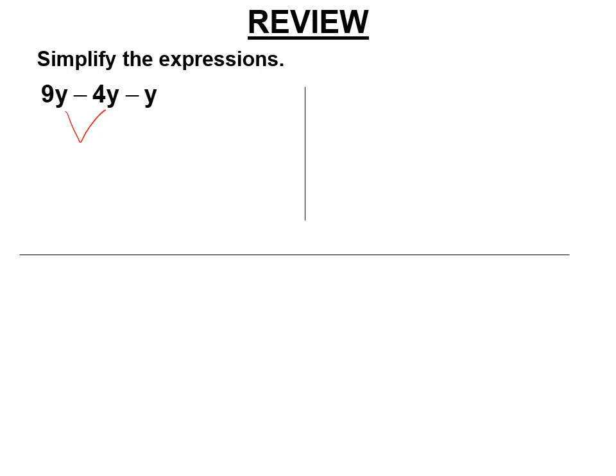Order of operations here, right? You have to do the one on the left because it's a tie. 9y minus 4y is 5y. 5y minus y is 4y.